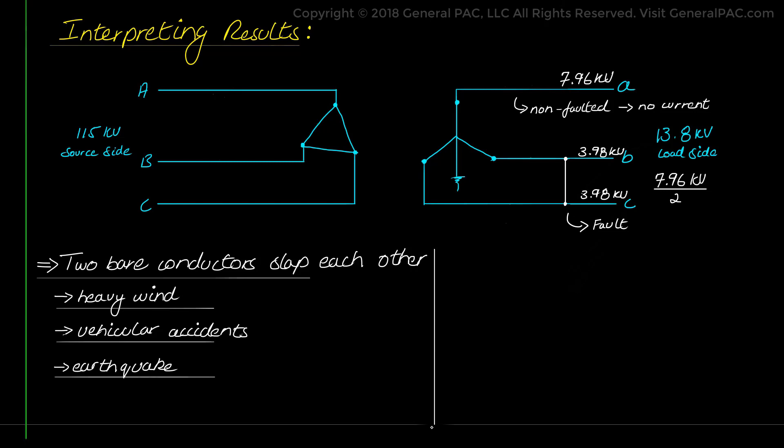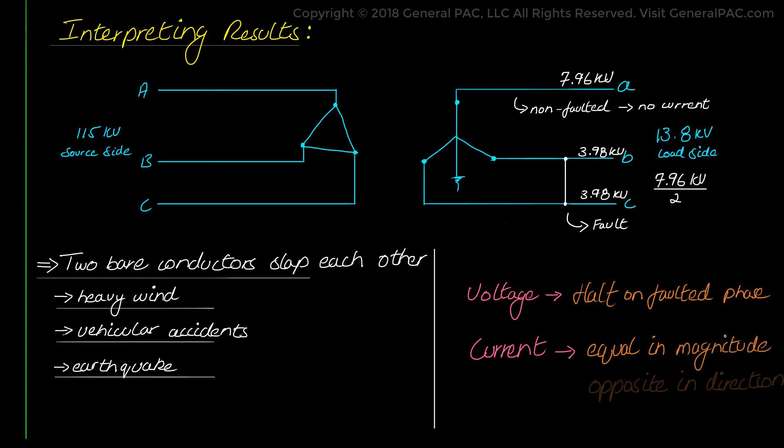When we analyze the fault looking at waveforms, we would expect typically for the voltages to be exactly half for the faulted phase, and the fault currents on the faulted phases to be equal in magnitude but opposite in direction.